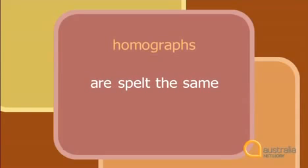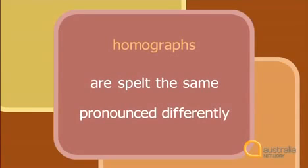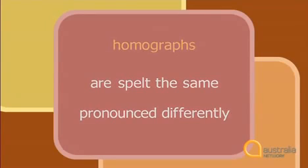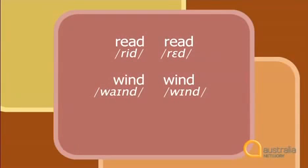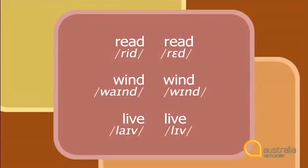Another type of homonym is a homograph. Homographs are words that are spelt the same, but in different contexts the word will be pronounced differently. Some common examples are 'read' and 'read', 'wind' and 'wind', 'live' and 'live'.